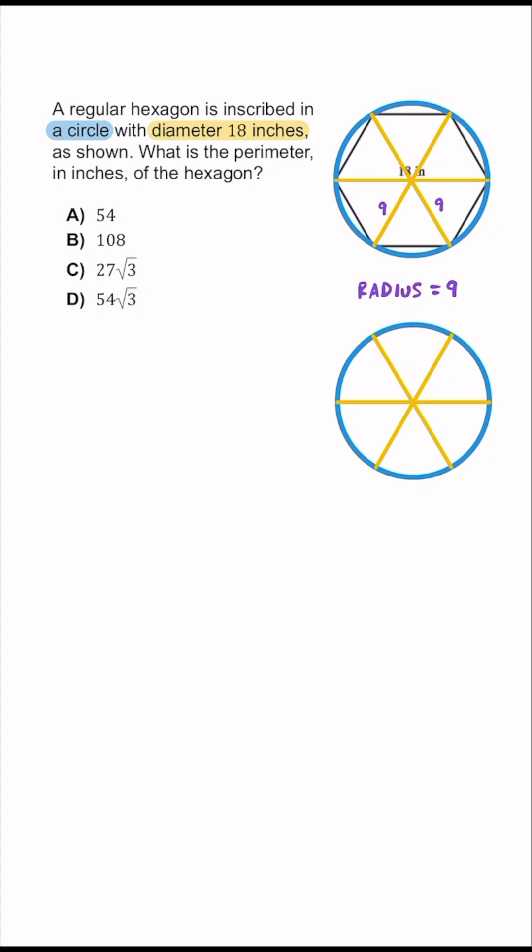Let's ignore the hexagon for a moment, and if we just look at this circle, remember that all the angles inside here should add up to 360 degrees to make a full circle. So it looks like we have six different sections here.